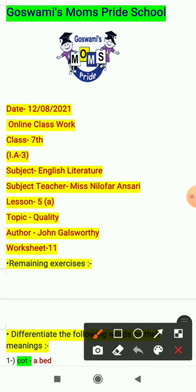As you all know, we are doing the syllabus of internal assignment 3. Our subject is English Literature and in today's video I will explain worksheet 11 which is related to lesson 5A. The topic of the lesson is Quality. Author of the lesson is John Galsworthy. In the previous worksheet we have done some exercises, and in today's worksheet I will explain the remaining exercises related to lesson 5A only.